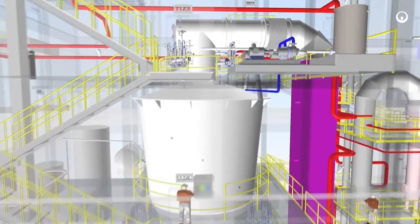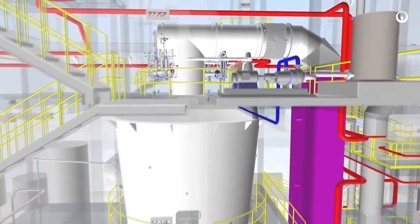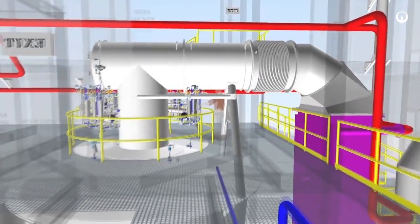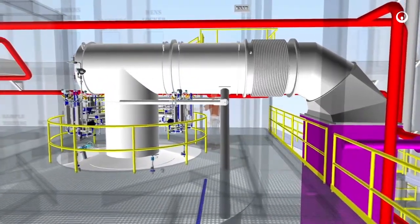Flue gas exiting the reactor is treated at the first stage of air pollution control with ammonia injection through a selective non-catalytic reduction type process to reduce nitrogen oxides.